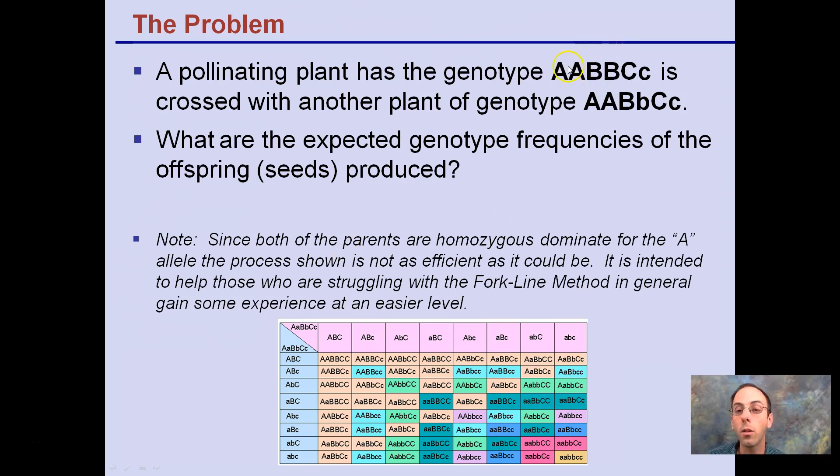Now, since both parents are homozygous dominant for the A allele, the process shown isn't quite as efficient as it could be, but this is intended to help those that might be struggling to understand this method. Odds are you probably haven't seen this in middle school or anywhere else. This might be your first exposure to it and that's okay. I want you to be sure that you can understand it.